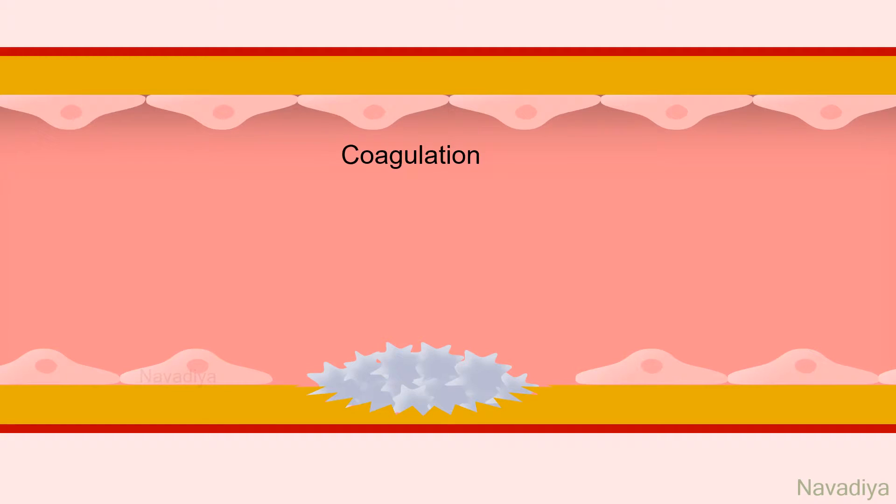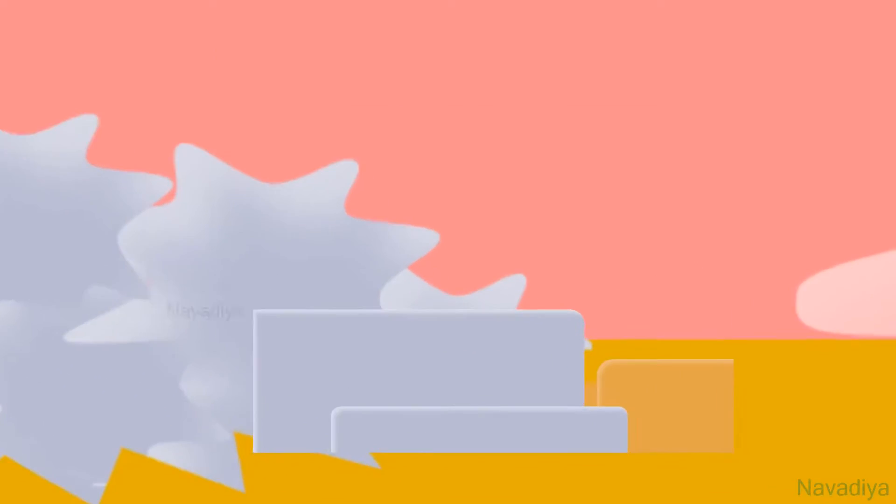It starts by two pathways: intrinsic pathway and extrinsic pathway. Both of them merge at the common pathway. Now let's see them in detail.